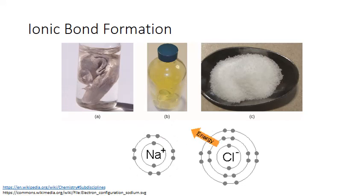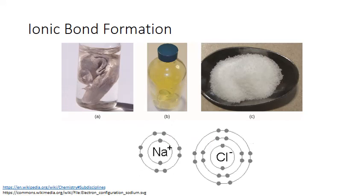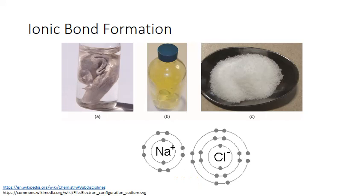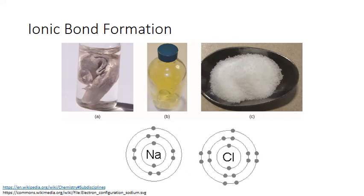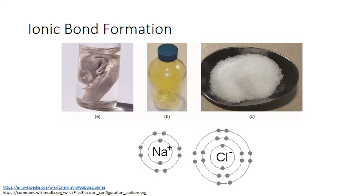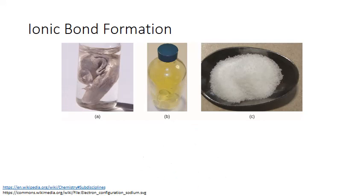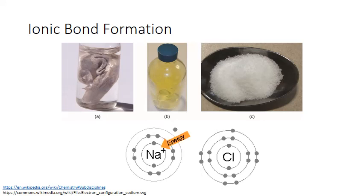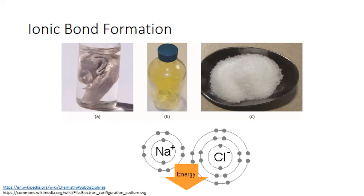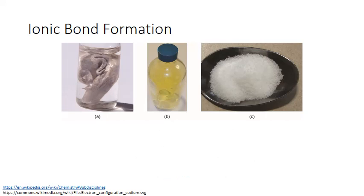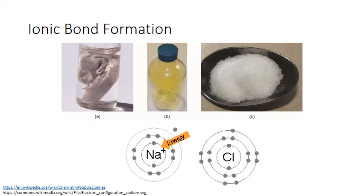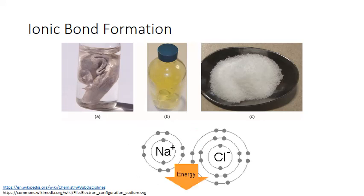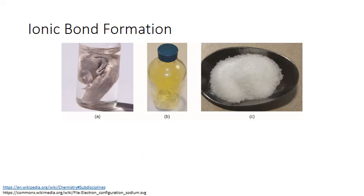Let's look at how this reduction in potential energy happens for ionic bond formation first. When sodium chloride is formed from the elements sodium and chlorine, we know that an atom of the metal sodium loses an electron, while chlorine gains one. Both of these processes involve energy. For sodium, we're working against the attractive pull of the positive sodium nucleus for its outer negatively charged electron.